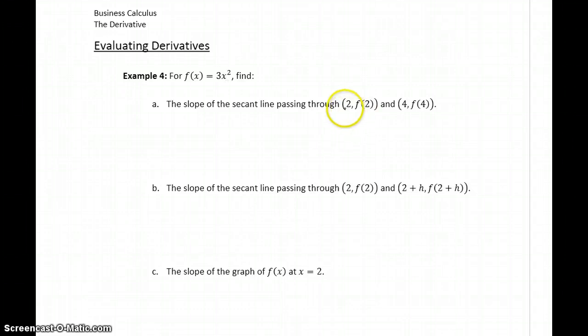We want to find the slope of the secant line passing through (2, f(2)) and (4, f(4)).